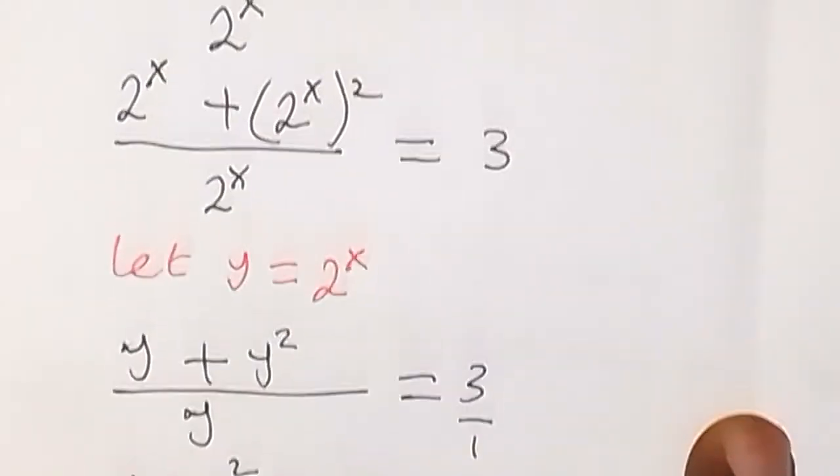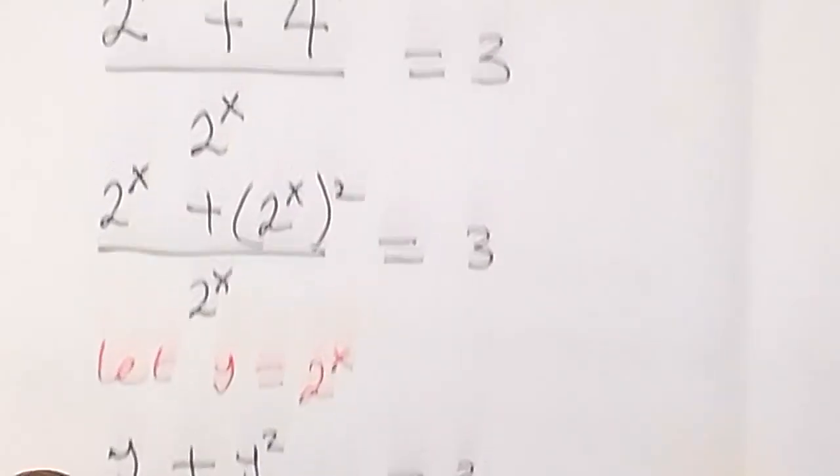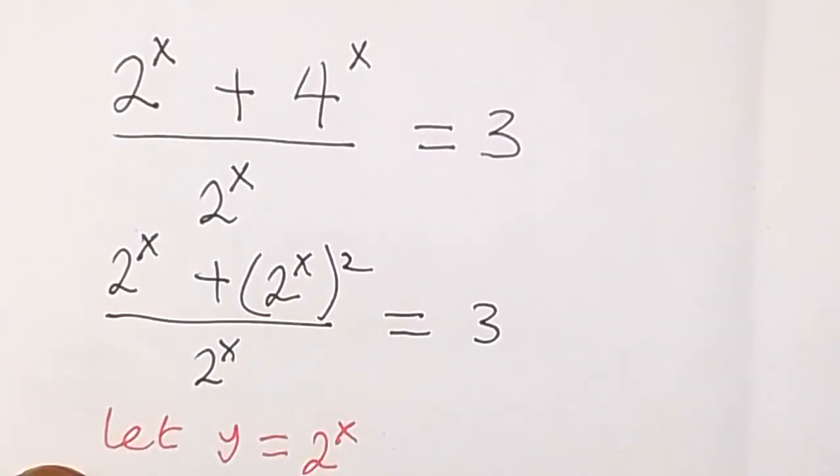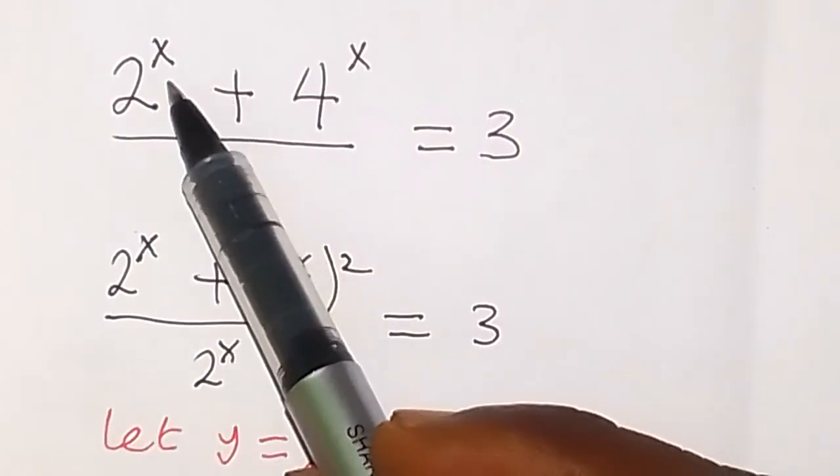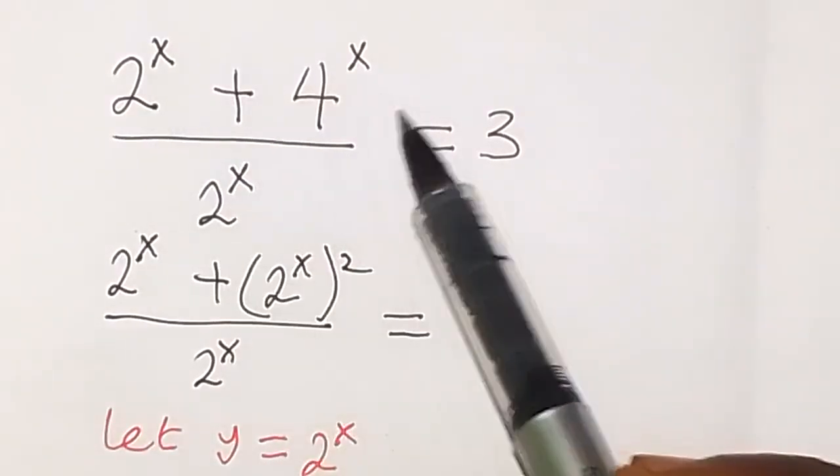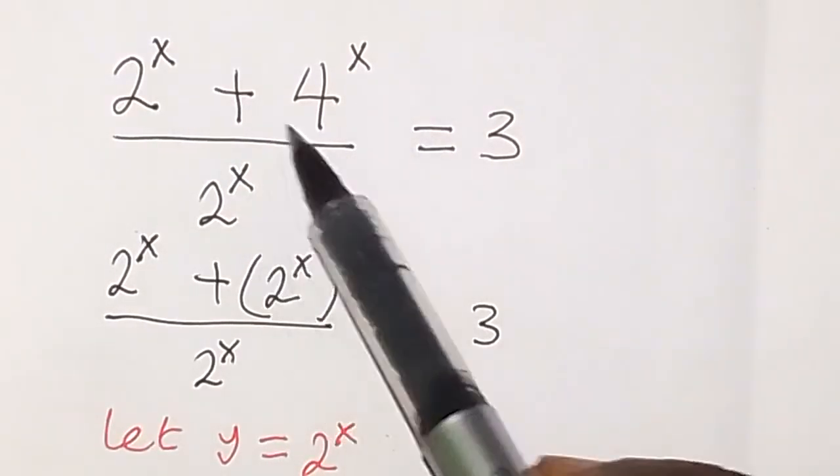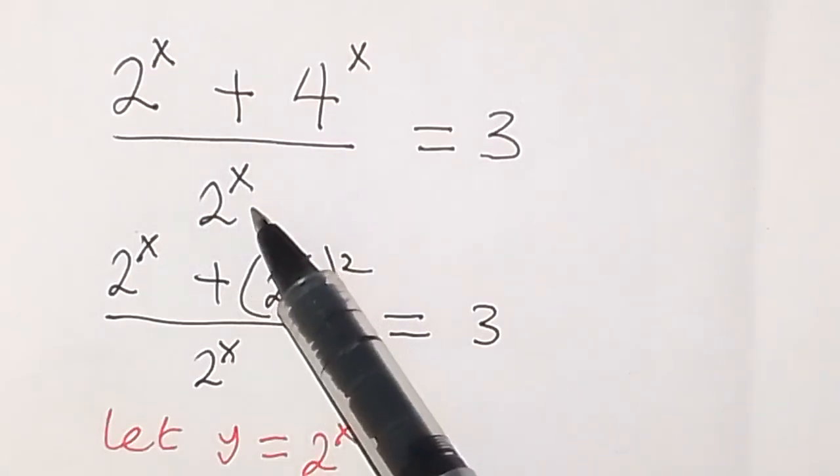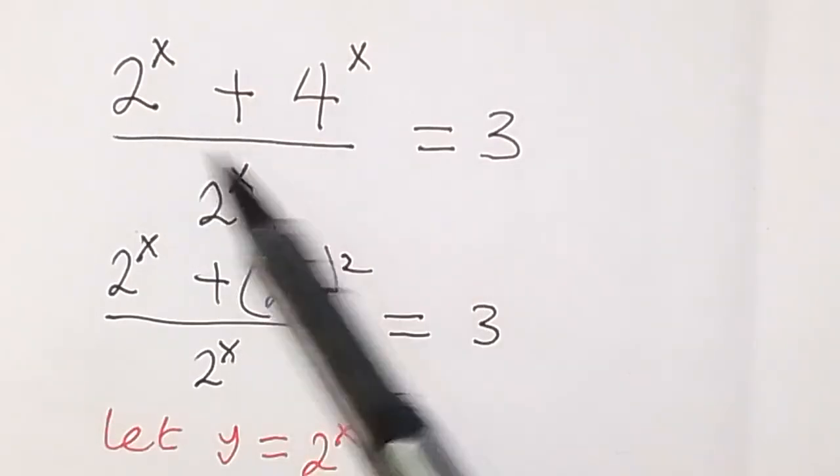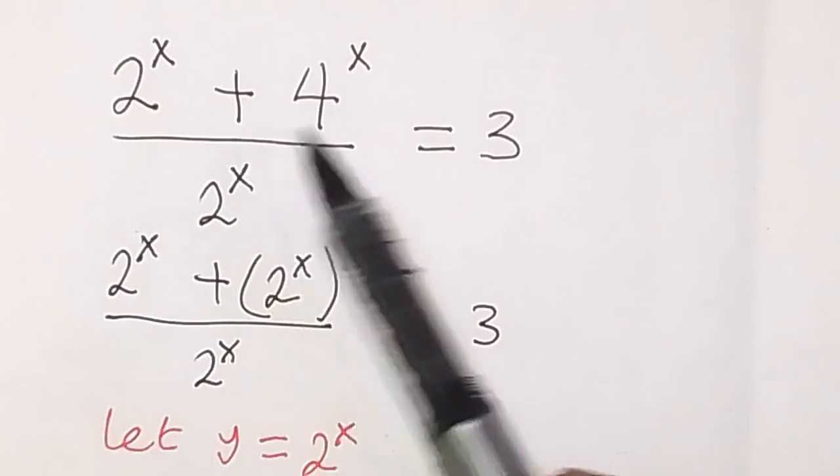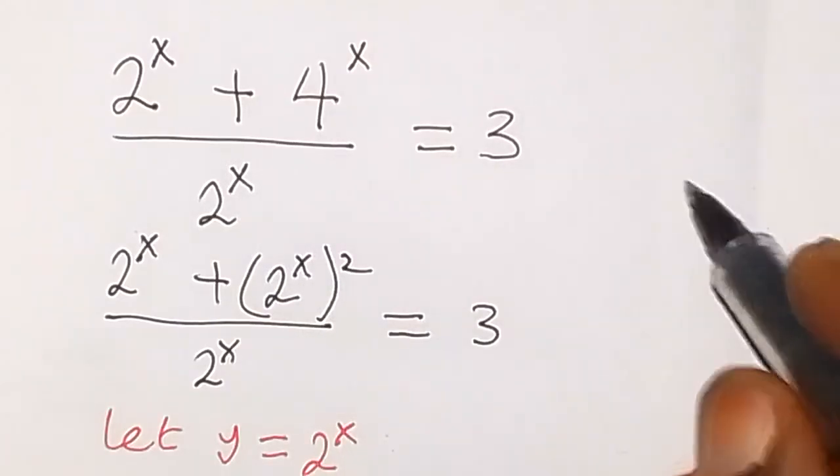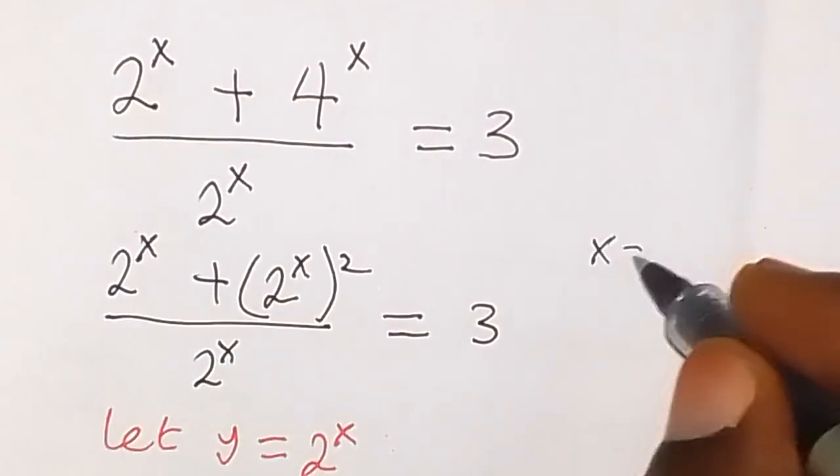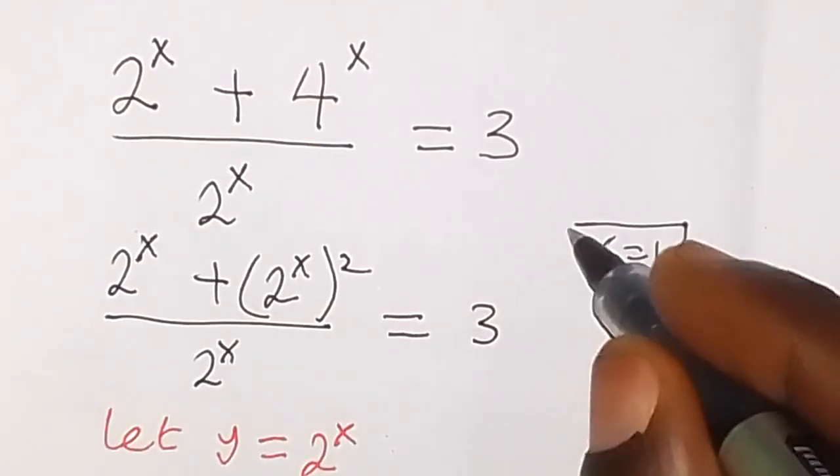So we have x equals to 1 here as the solution for x. We can check from our exponential equation given. If we put x equals to 1 here, that's 2 raised to power 1 is 2, plus 4, rather 2 plus 4 is 6, and 6 divided by 2 gives us 3.